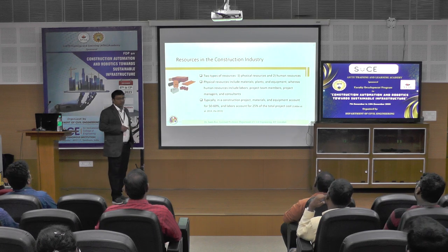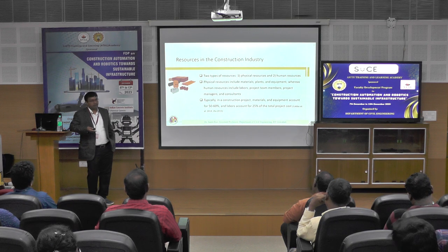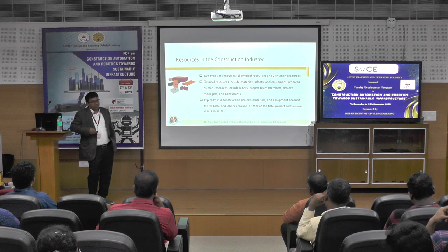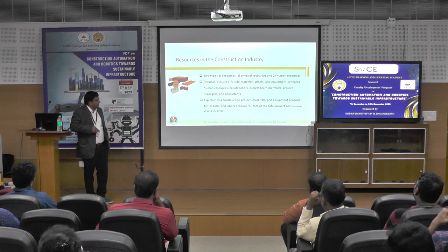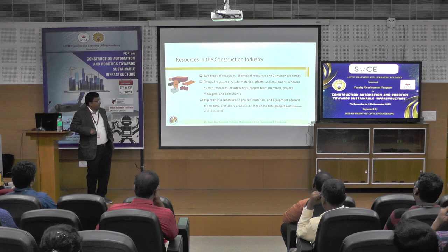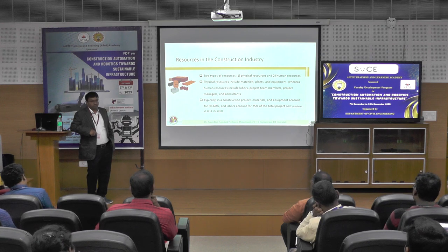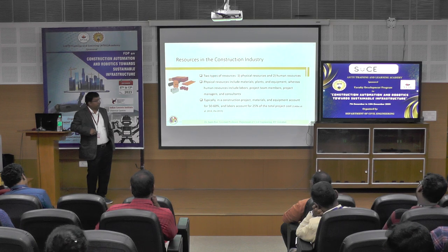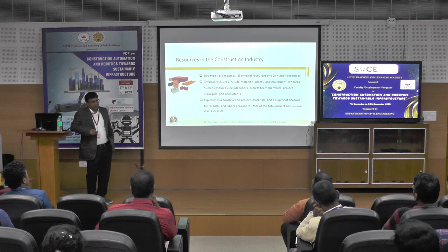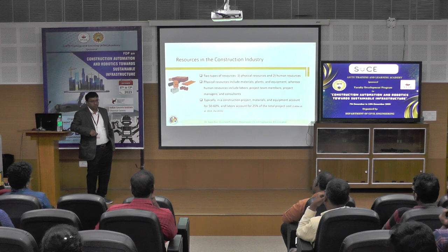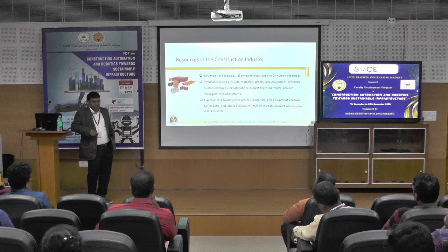There are two types of resources: physical resources, which include materials, plant, and equipment, and human resources, which include labor, project team members, project managers, and consultants. Typically in a construction project, materials and equipment account for 50 to 60 percent of total project cost, while labor accounts for 25 percent. Therefore, material management and labor management are two crucial aspects for optimized acquisition in the construction industry.